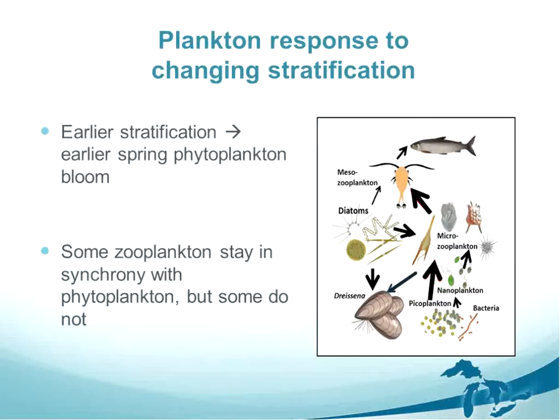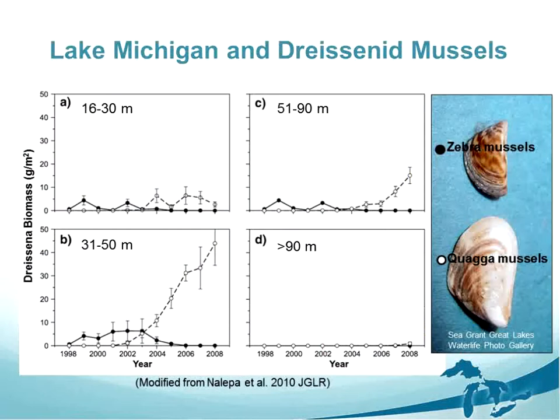Plankton can have different responses to changing stratification. Earlier stratification can cause an earlier spring phytoplankton bloom, but zooplankton may not respond at the same time, putting some species out of sync with their primary food source. If phytoplankton bloom much sooner, then daphnia arriving mid-season might find less food. These impacts can move up the food chain and ultimately affect fish. I've focused a lot on the stress of dreissenid mussels, particularly in Lake Michigan, which show extreme biomass growth in the 30-to-90-meter depth range.